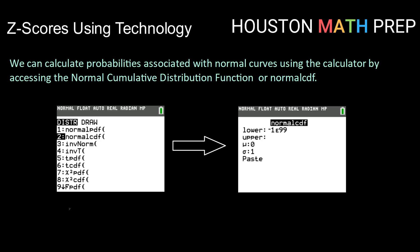In this video we're going to look at how to use z-scores with technology to find area underneath a normal curve or probability associated with a normal distribution. The way to do that is to access the normal cumulative distribution in our calculator, often shortened to normal CDF.